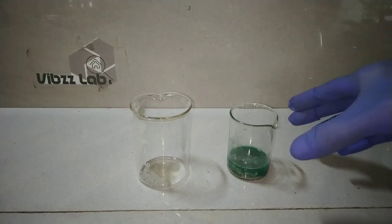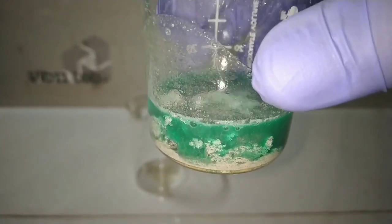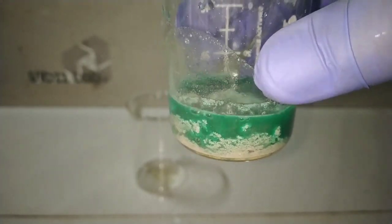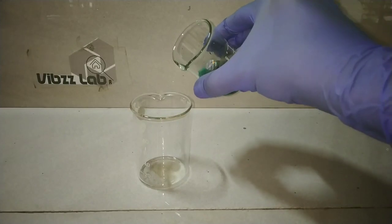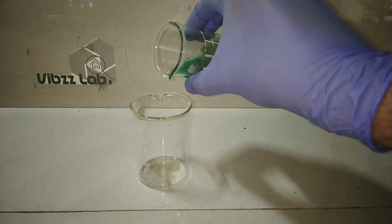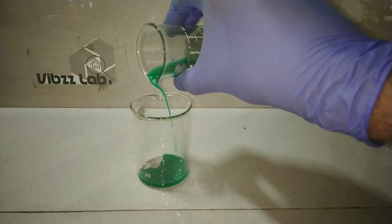I kept the solution for about 1 hour and when I checked, I found that most of the silver metal has precipitated out. Now I will decant the supernatant solution containing mostly copper nitrate and then wash my silver precipitate a couple of times with deionized water.